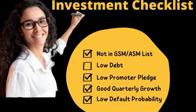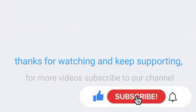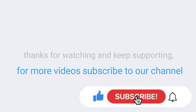Investment checklist — not in GM and AM list, low debt, low promoter pledge, good quarterly growth, low default probability. Thanks for watching and keep supporting. For more videos, subscribe to our channel.